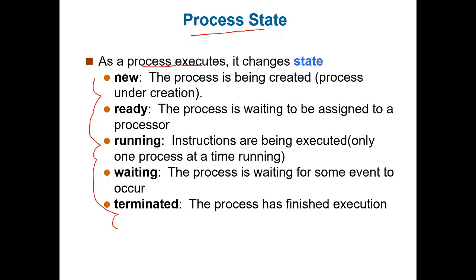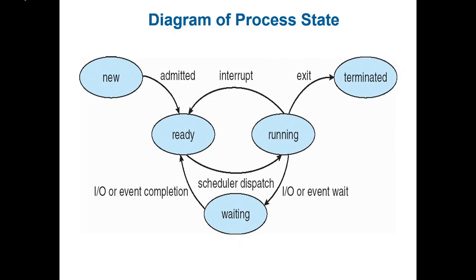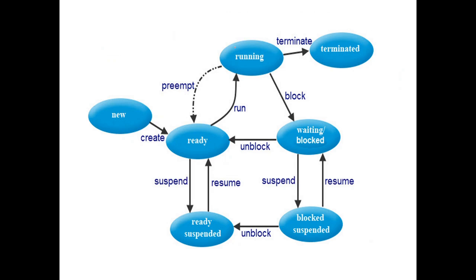As a process executes, it changes states. You can see the diagram: State 1 is the new state, State 2 is the ready state, State 3 is the running state, State 4 is the waiting state, and State 5 is the terminated state — these are the basic states. In the second diagram, two extra states have been added, making State 6 and State 7 in total.